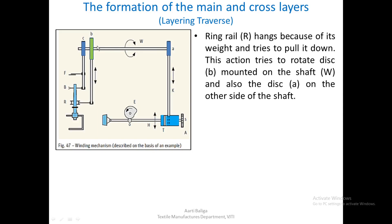These are simply discs on the shaft, connected via belts or chains — not pulleys. When the ring rail, because of its weight, tries to pull the entire system downwards, this action tries to rotate disc B mounted on shaft W and also disc A on the other side. The discs try to rotate in the clockwise direction when viewed from the right-hand side, trying to rotate disc A in the clockwise direction.